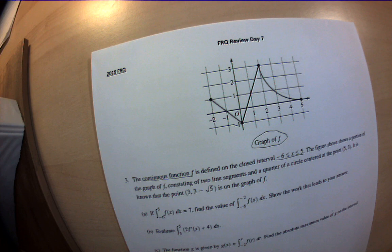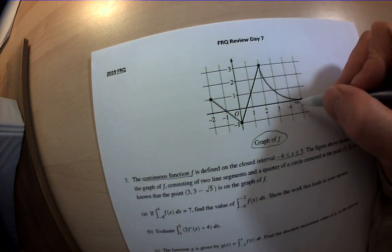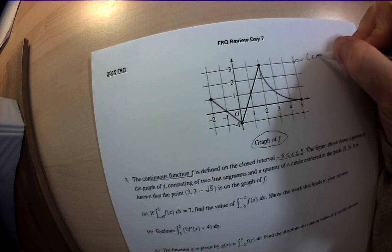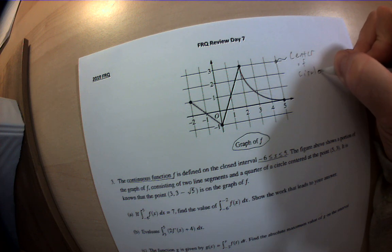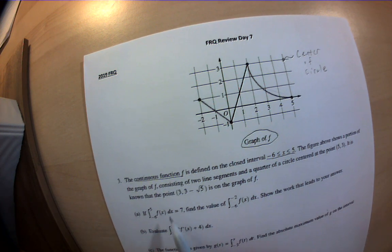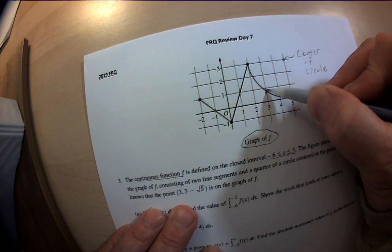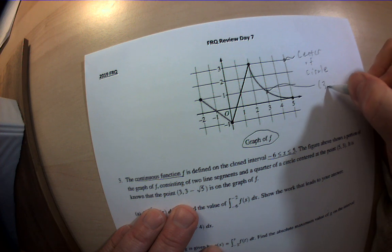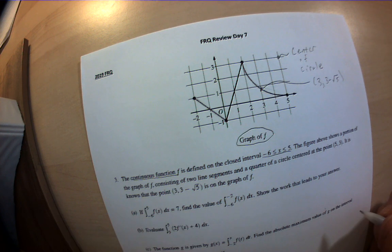Center at the point (5, 8). So here's the center of the circle. Sometimes it's helpful to draw things. It's known that the point, so this point right here, that point right there is (3, 3 minus root 5). That's kind of odd, but they told me it.